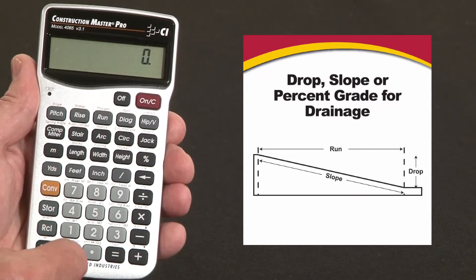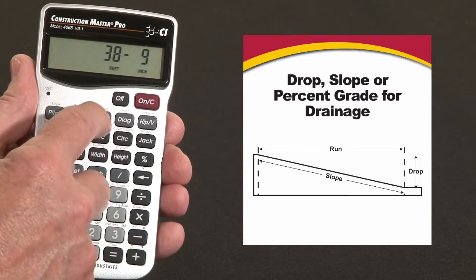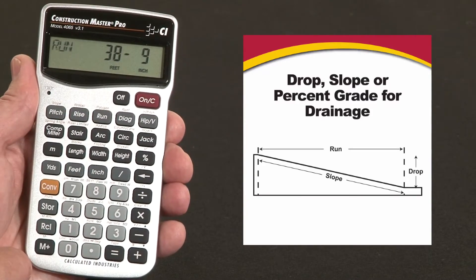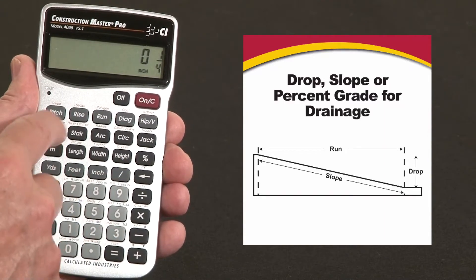Say we've got a total run of a driveway of 38 feet 9 inches - we'll call that our run. We want it to fall or drop at a quarter inch per foot. One quarter inch - call that our pitch.